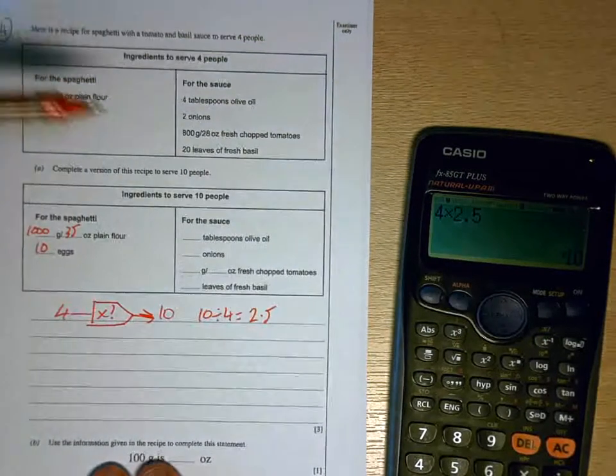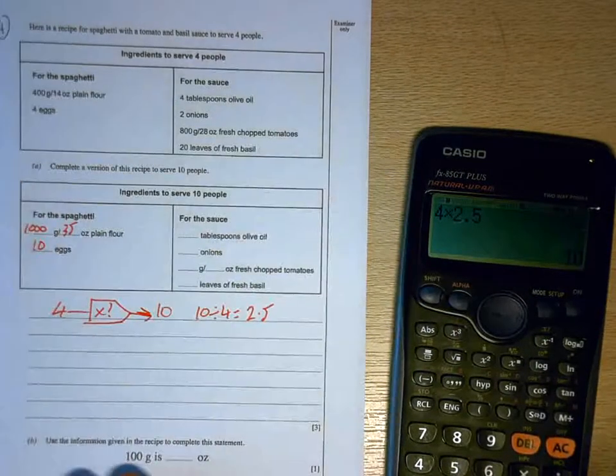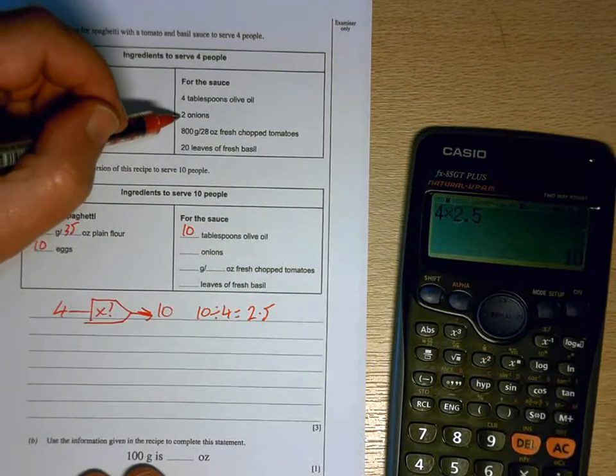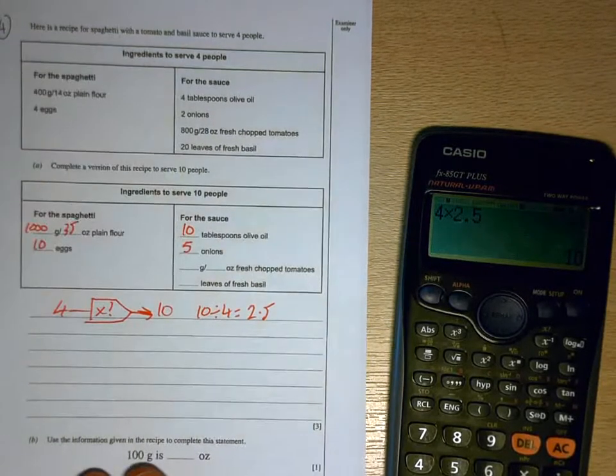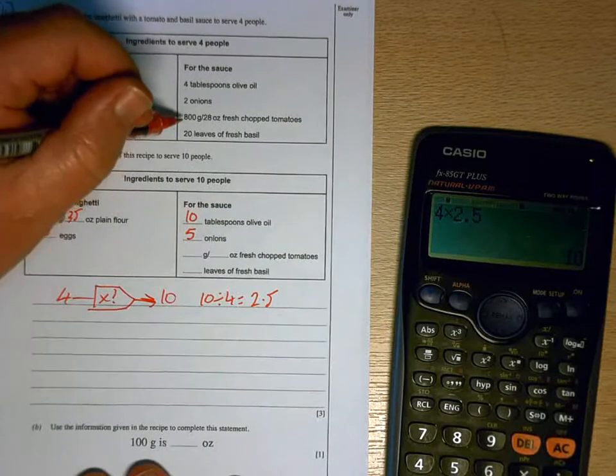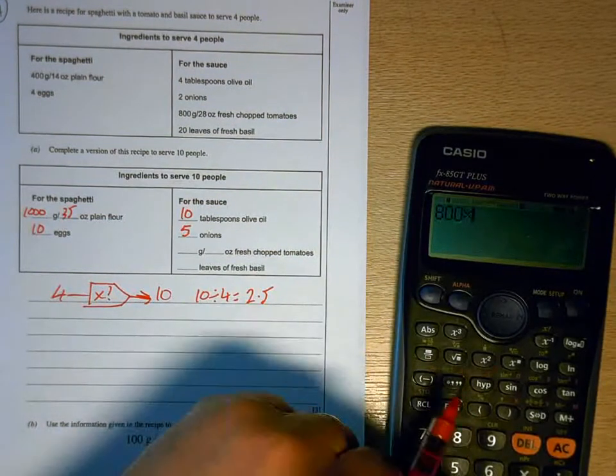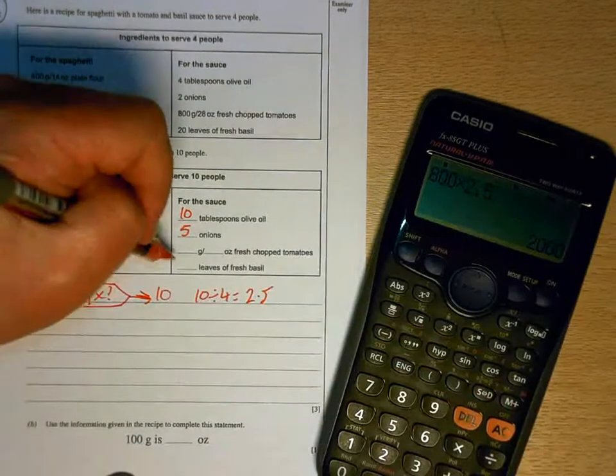This side for the sauce, 4 tablespoons will be 10 tablespoons. 2 onions will be 2 lots of 2.5, 5 onions. 800 grams will be 800 times 2.5, 2,000 grams.